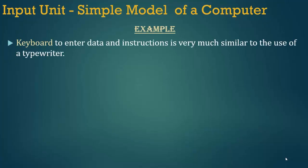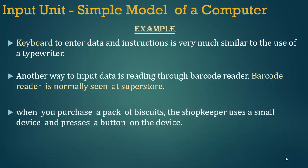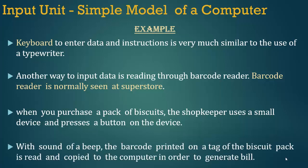For example, using the keyboard to enter data and instructions is very much similar to the use of a typewriter. Another way to input data is reading through a barcode reader. A barcode reader is normally seen at a superstore. When you purchase a pack of biscuits, the shopkeeper uses a small device and presses a button. With the sound of a beep, the barcode printed on the tag of the biscuit pack is read and copied to the computer in order to generate a bill.